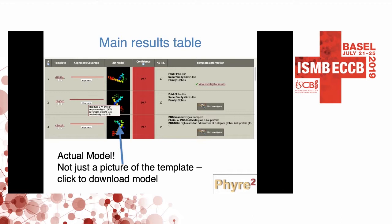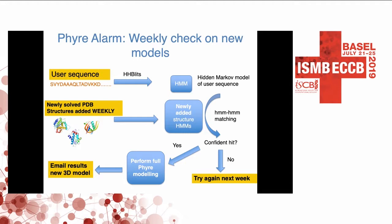You get an indication of the confidence of the prediction, and even here we have very high confidence predictions at low levels of sequence identity. Unfortunately, we can't always find a template for users' query submissions.